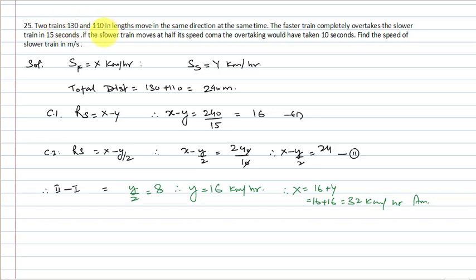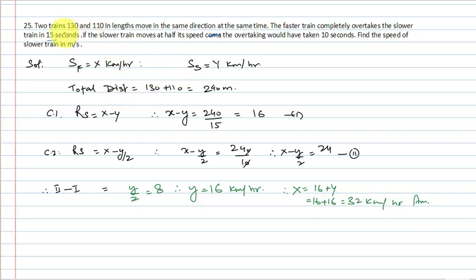Last question of this exercise: Two trains 130 and 110 meters long move in the same direction. The faster train completely overtakes the slower in 15 seconds. If the slower train moves at half its speed, overtaking takes 10 seconds. Find the speed of the slower train in meters per second. Let faster train speed = x, slower = y. Total distance = 130 + 110 = 240 meters.